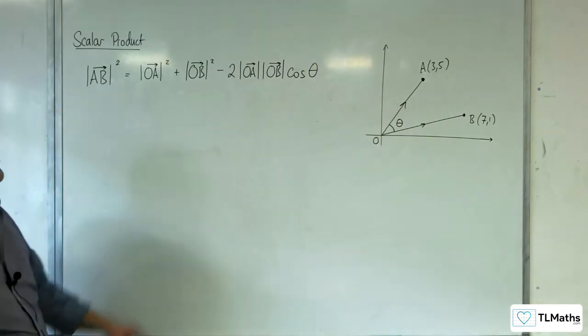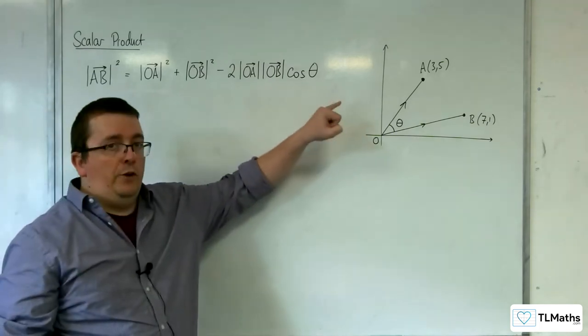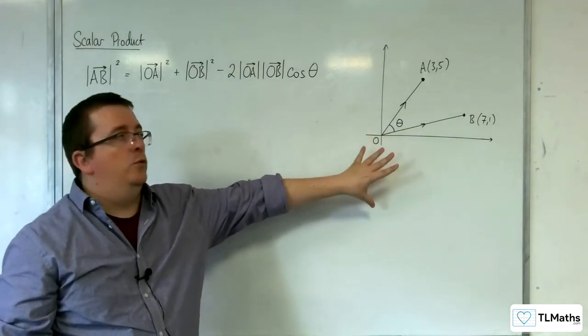So that is the cosine rule using the vectors that we have.